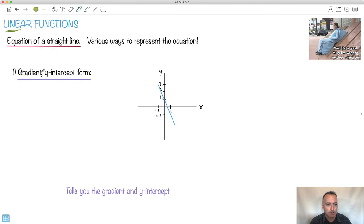There's three different forms I'm going to show you. One of them is called the gradient y-intercept form. It's probably the most common one. You've very likely already seen it, but if you haven't, well here it is. It goes y equals mx plus c.